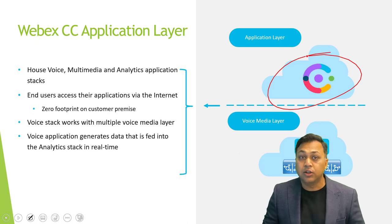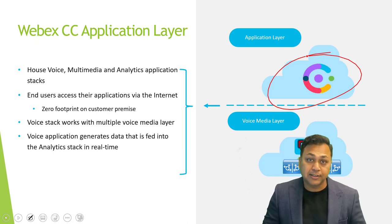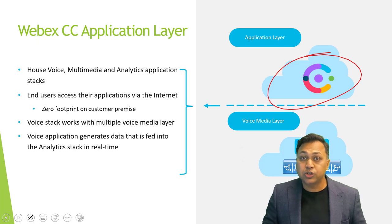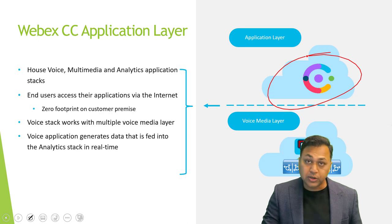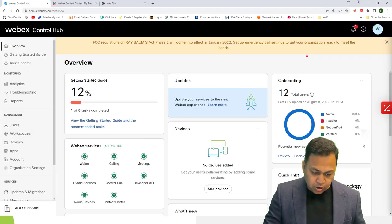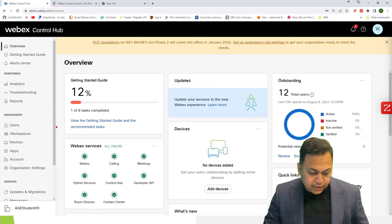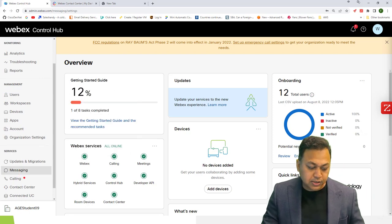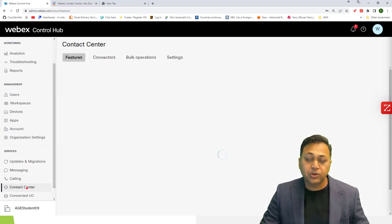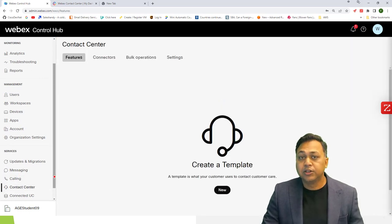Users will access their applications via the internet, so no particular software is required to install. We access these applications using the Control Hub. In your Control Hub on the left-hand side, you see various options: messaging, calling, and contact center, which gives you access from the customer or user perspective to your platform.